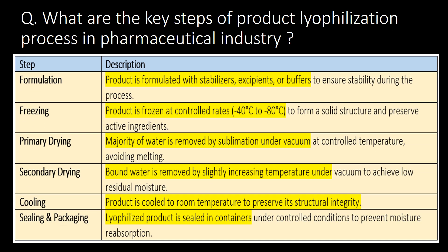Starting with a very basic and important question: what are the key steps of product lyophilization in the pharmaceutical industry? The first step is formulation, where the product is formulated with stabilizers, excipients, or buffers. The second step is freezing, where the product is frozen at controlled rates from minus 40 degrees Celsius to minus 80 degrees Celsius.